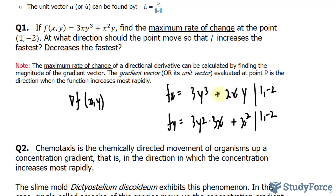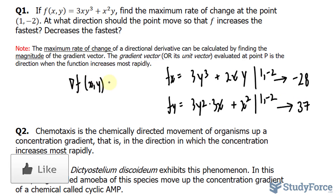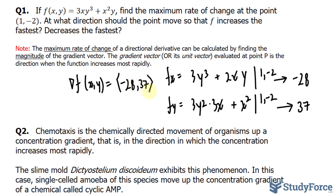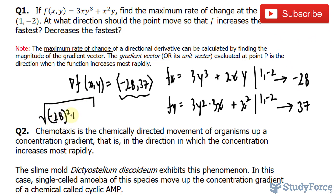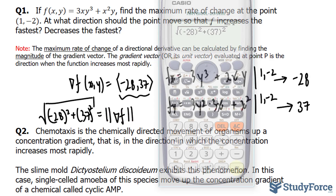Evaluating f_x at (1, -2) gives us -28, and evaluating f_y at (1, -2) gives us 37. So the gradient of f at (x, y) can be represented by the vector (-28, 37). We're expected to find the maximum rate of change at the point (1, -2), and we can do that by calculating the magnitude of the gradient vector.